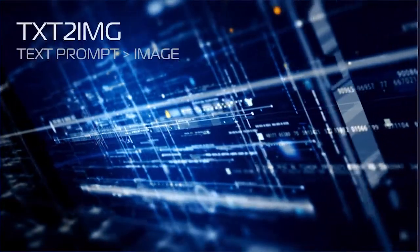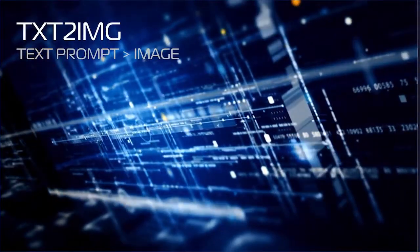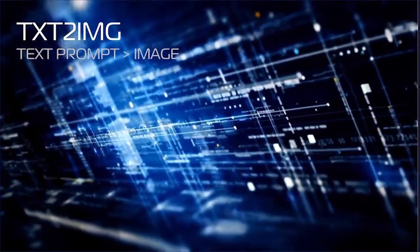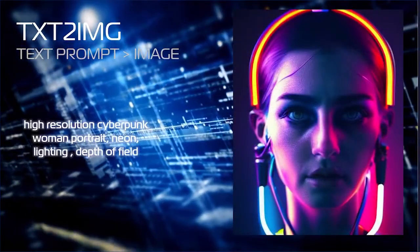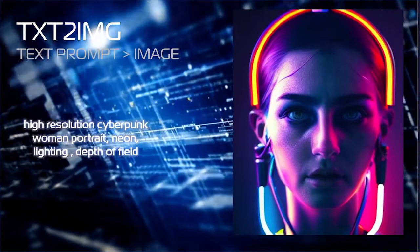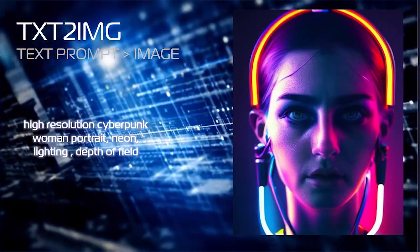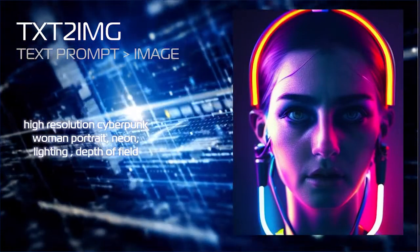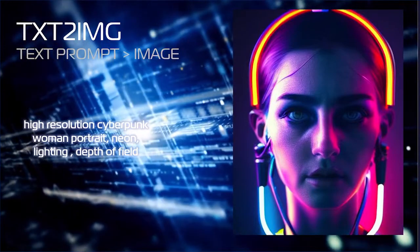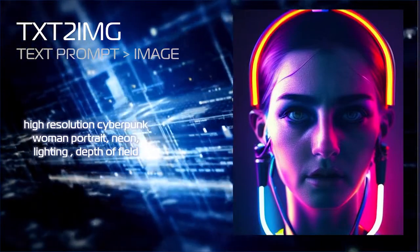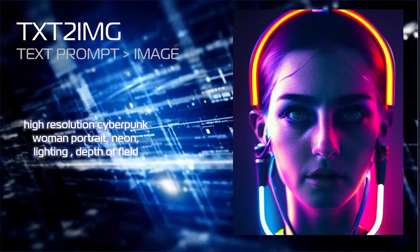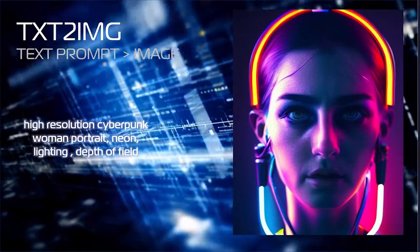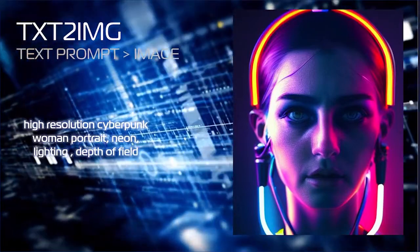Text to image is the most familiar AI imaging process. Using a text prompt, the AI generates an image. In this example, the prompt is 'a high-resolution cyberpunk woman portrait, neon lighting, depth of field.' Our result, using MidJourney, is a highly detailed portrait of a cyberpunk woman.